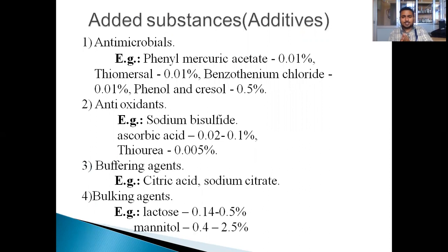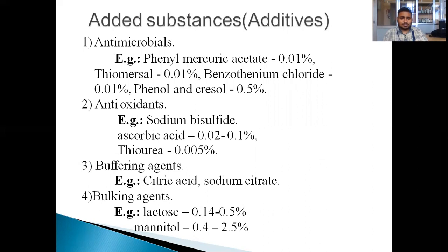Let's discuss about the additive substances used in large and small-volume parenterals. First are antimicrobials. Examples are phenylmercuric acid at 0.1%, thimerosal at 0.01%, benzalkonium chloride at 0.01%, and phenol and cresol at 0.5%. These are the examples of some antimicrobials.